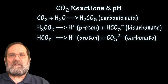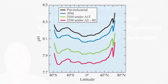Waters near the poles are more alkaline because of cooler temperatures. Higher carbon dioxide concentrations in the atmosphere and warmer temperatures increase proton concentrations in the oceans — that is, they lower pH — and thereby water in the oceans is becoming more acidic.